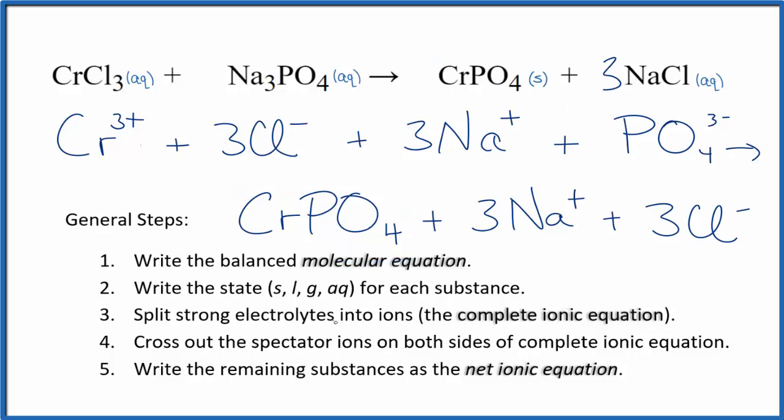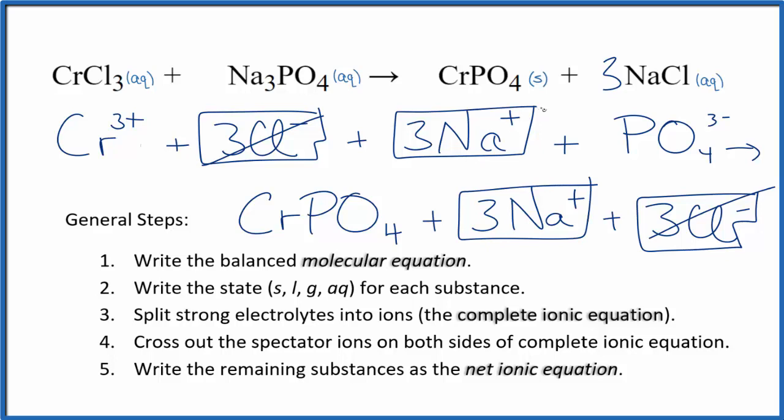Now we can cross out spectator ions. They're on both sides. In the reactants, we have three of these chloride ions also in the products, so those are spectator ions. We cross them out. Three sodium ions in the reactants and three sodium ions in the products. Spectator ions, we cross them out.